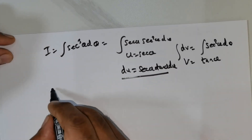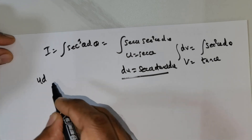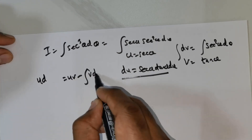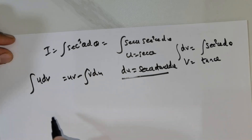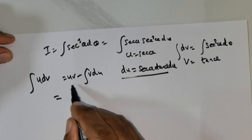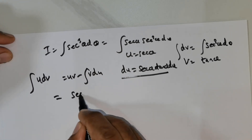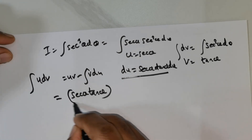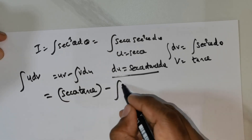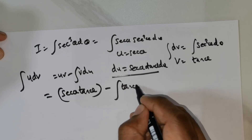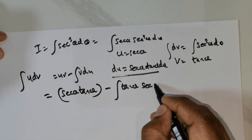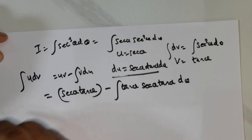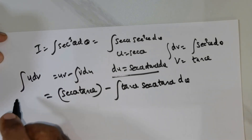Coming back to our uv minus integral v du formula: u is secant theta, v is tan theta, and du is secant theta tan theta d theta. On the left we have I.